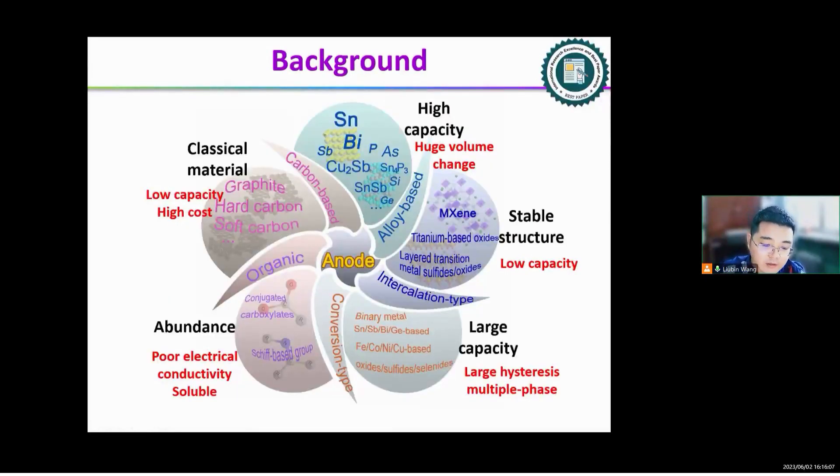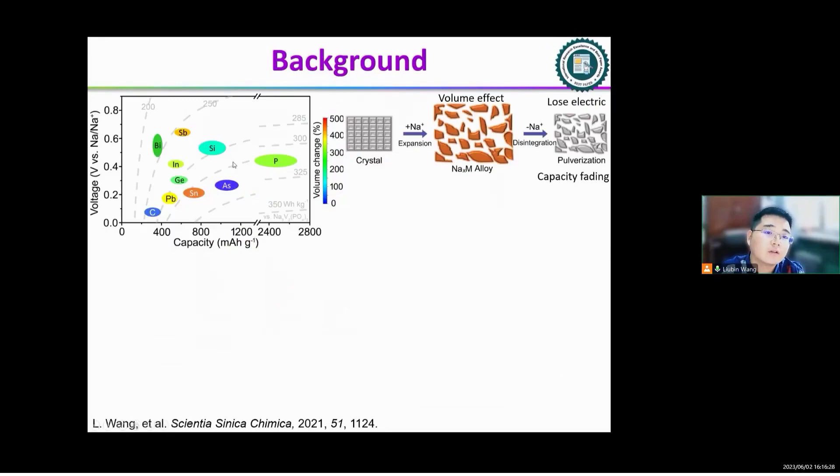This is the types of anodes in sodium ion batteries: alloying type anode, intercalation type anode, conversion type anode, organic materials, or carbon-based materials. All this has possessed their advantages and disadvantages. We choose alloying type anode because the alloying type anode has a high theoretical capacity due to the multi-electron transfer mechanism.